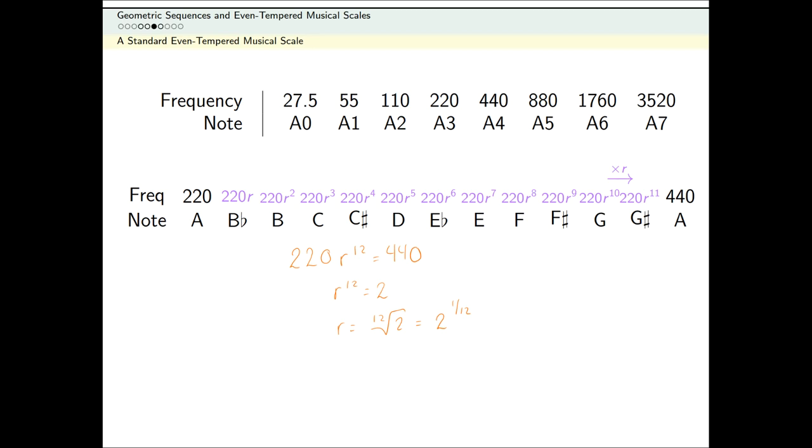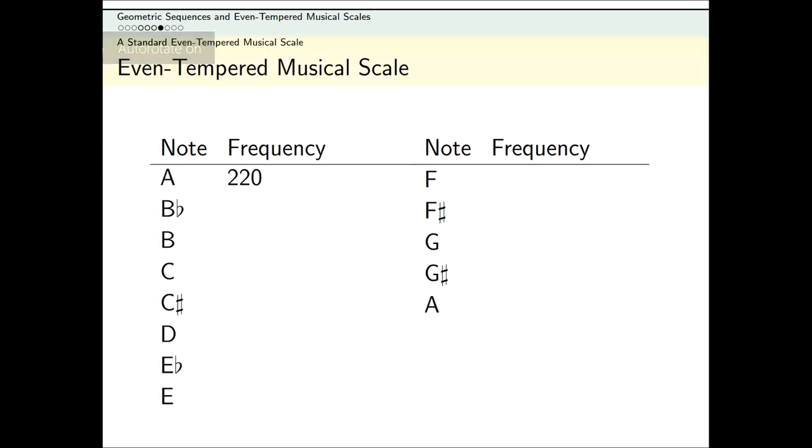Now that I know my common ratio, I can figure out the frequency for all of these different notes. The frequency for B-flat should be the frequency of A times R.